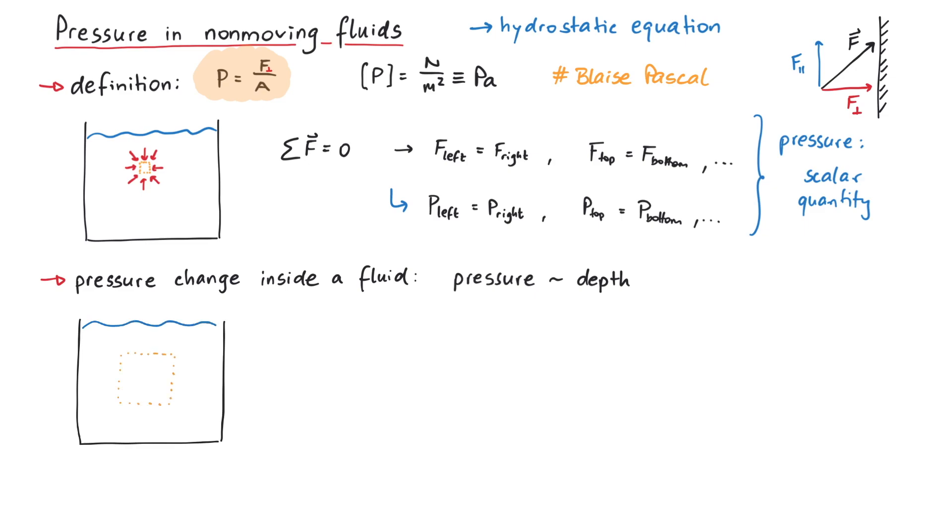Consider some volume of the fluid, which is now not infinitesimally small anymore. This means there is a downward acting force due to gravity, since this volume of fluid has some mass m. Furthermore, we also have two more vertical forces: one from the fluid above pushing down, and one from the fluid below pushing up.